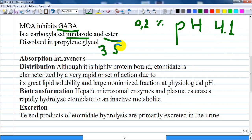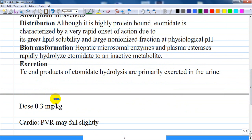Propylene glycol is used to improve solubility and reduce its irritant properties on injection. It is used for induction of general anesthesia at the dose of 0.3 mg per kg.